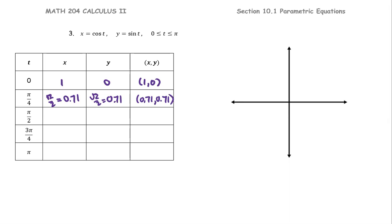For t equals pi over 2, cosine pi over 2 is 0, sine pi over 2 is 1, so the ordered pair is (0, 1).